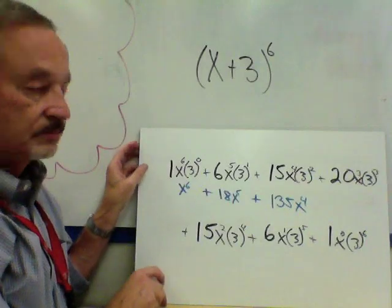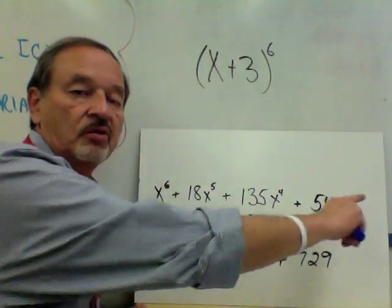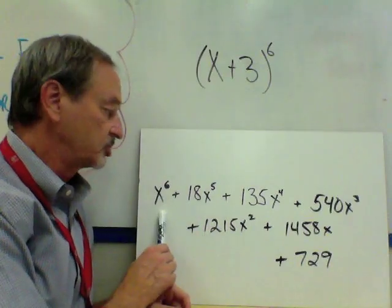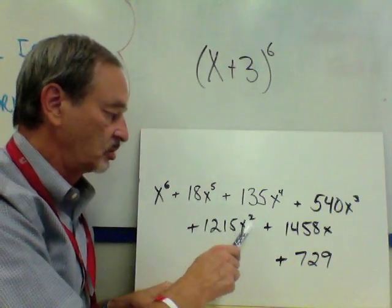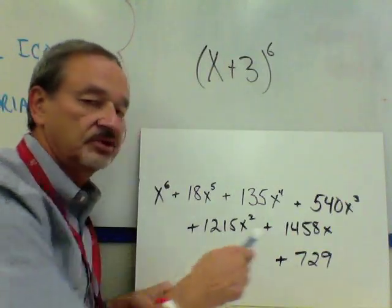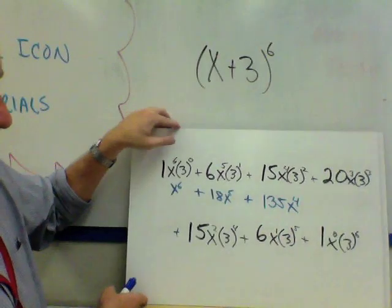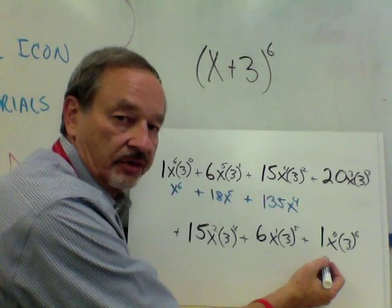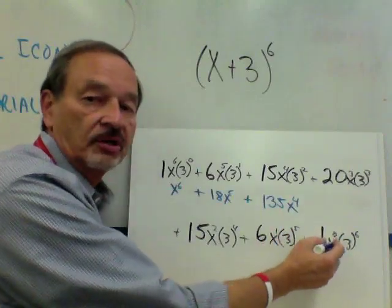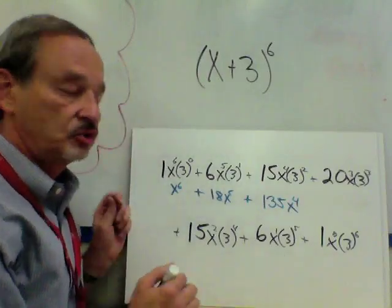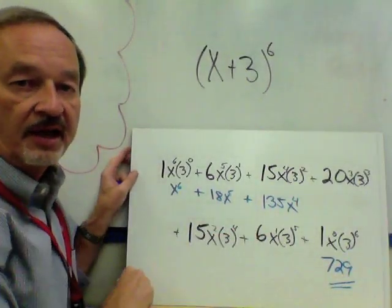If you're done, the final answer should look like this — yours may be written all the way across the page. The terms are: X to the sixth, plus 18X to the fifth, plus 135X to the fourth, plus 540X to the third, plus 1,215X squared, plus 1,458X, plus 729. Let's check that last term: the coefficient is 1, X to the 0 is 1, and 3 to the sixth in your calculator gives 729 — that's why the last term has no X in it.